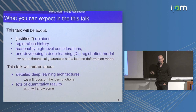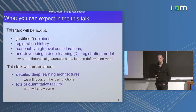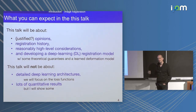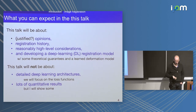As a quick overview: I'll give you a bunch of opinions which may or may not be justified, so feel free to push back. I'll talk about registration history, where we used to be and where we're going now. The talk will be at a reasonably high level but will include some equations. I will not talk a lot about deep learning architectures — I just assume they're given — and I'll focus on the loss functions used to train these models. I also won't give lots of quantitative results; just a high-level overview.